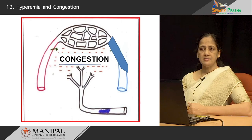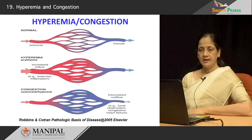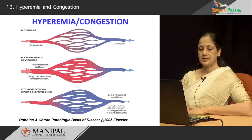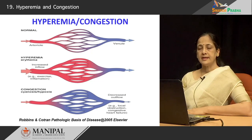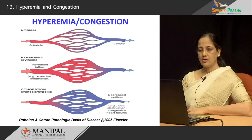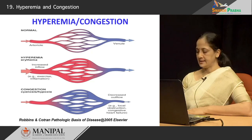So, looking at it together: hyperemia is an active process that occurs because of arteriolar dilatation, and this results in increased oxygenated blood within the tissue, causing the area to appear reddish when examined clinically. Congestion is because of the stagnation of blood in the venous side of the circulation, which means there is more deoxygenated blood, and therefore that part is going to look bluish on clinical examination.